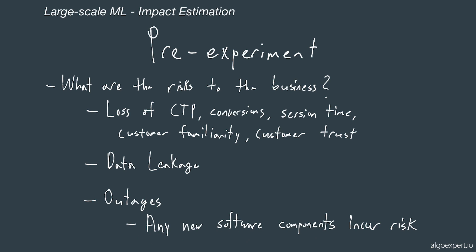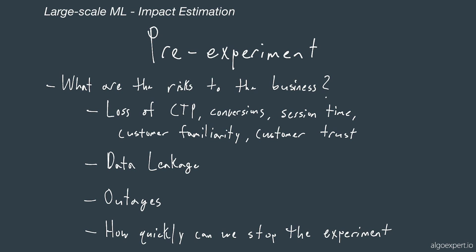Any time we introduce new components or change software components in our system, we risk a potential outage. Before we run the experiment, we also want to know how quickly we can stop the experiment — this is hugely important when experimenting with a significant portion of your business model. If it would take an entire day to revert, you may not be able to experiment until you can get that transition down to a few minutes. One risk not included here is the risk of not experimenting — companies willing to experiment and adjust their business models are often the ones that last.